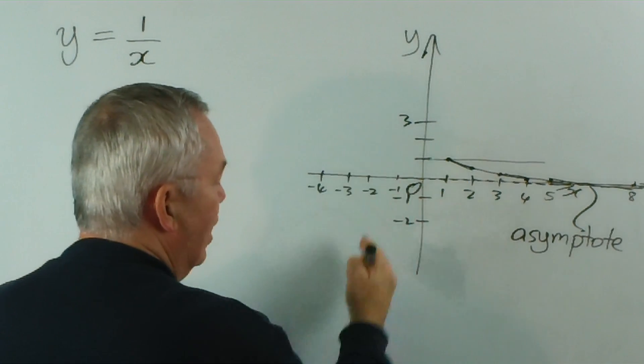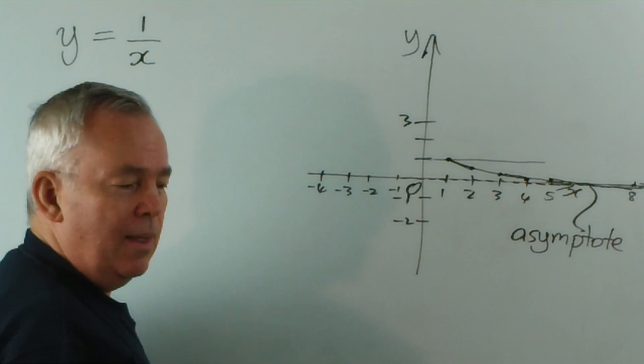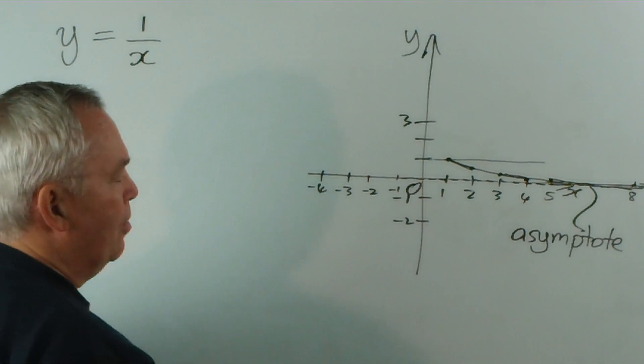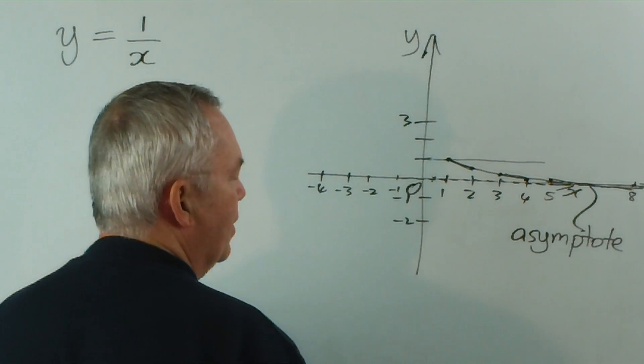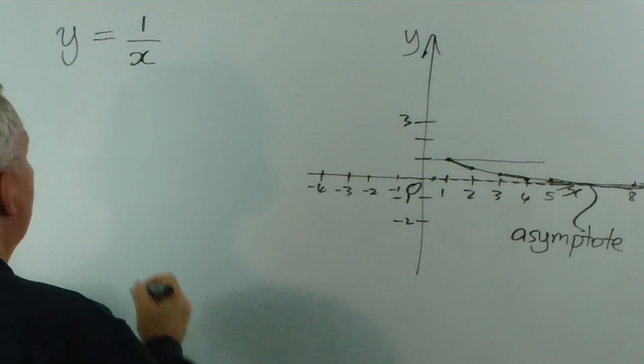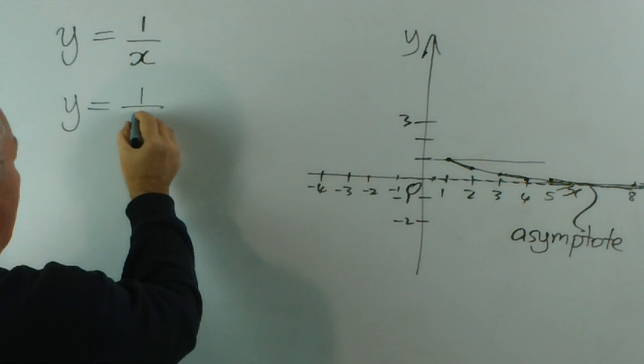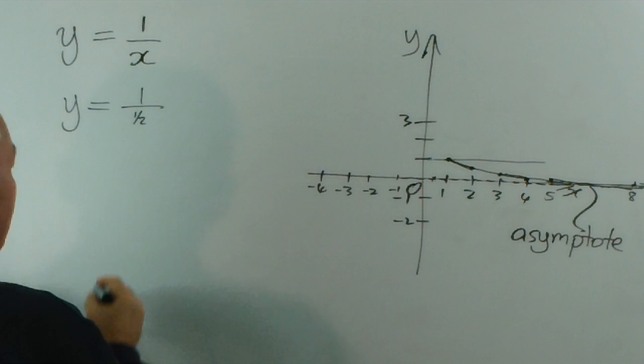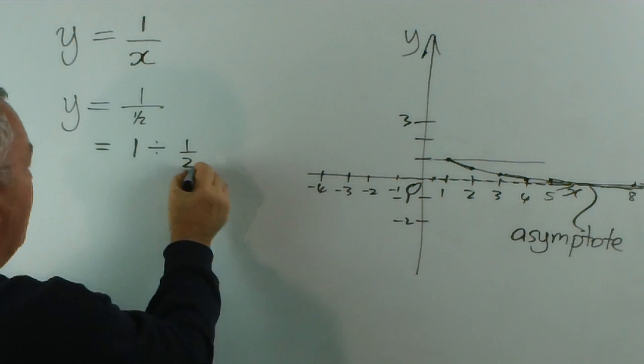If we came back this way, we find a different problem. And this is where we need to understand fractions quite well. If I substitute a half and I want to find the y value, I actually get this: y is equal to 1 divided by a half. Now we need to think of this in terms of 1 divided by a half.